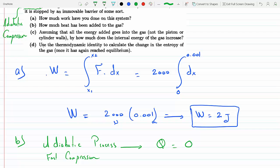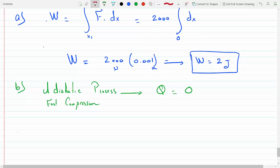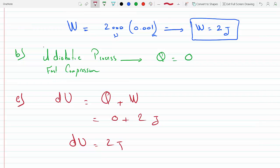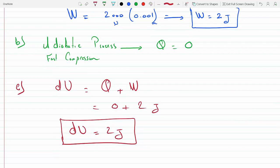Assuming that all the energy added goes into the gas, not the piston or the cylinder walls, by how much does the internal energy of the gas increase? So here we could use the first law of thermodynamics that says dU, the change in the internal energy, will be the sum of the heat being absorbed by the system plus the work done. Well, Q is 0, so this is going to be 0 plus the work, plus 2 joules. So that means dU will equal 2 joules. So the internal energy increases by 2 joules as we did 2 joules of work on the system.